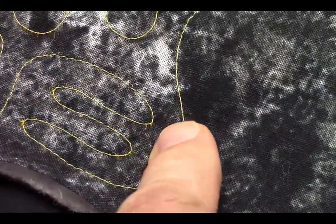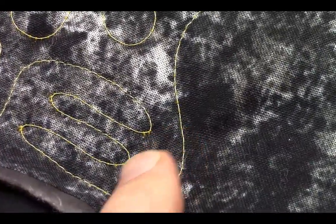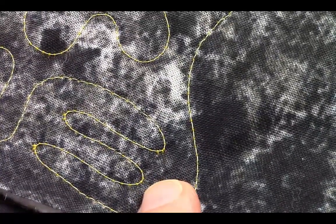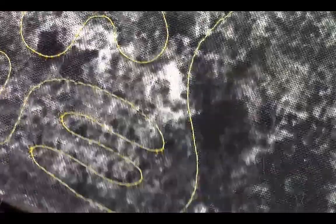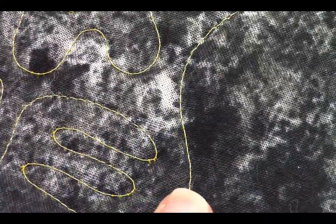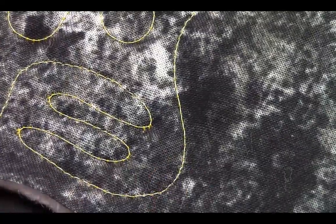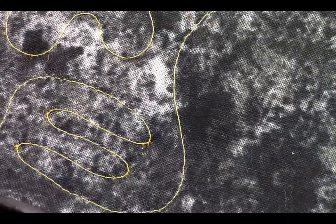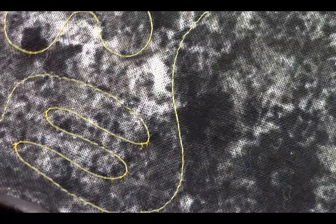But, when you turn it over, you will get what we call often railroad tracks or eyelashes. And that is the top thread being pulled down too far. Now, in this case, it is because my top was too loose. This could also happen if your bottom is too tight, the bobbin. That's what it looks like on the back.